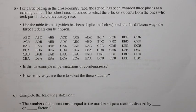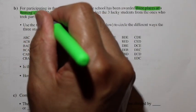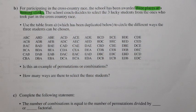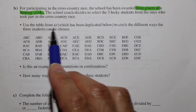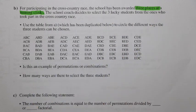Let's look at a different example. The same cross-country race — the school has been awarded three places at a running clinic. Notice carefully: these three places at the running clinic, are they all different? No — those positions are all exactly the same. It doesn't matter who comes in first, second, or third, as long as they were awarded a position at the running clinic. There's no arrangement of who is first to the clinic or second or third; it does not matter. So the order of our selection doesn't matter — we're just selecting three without arranging those selected three.